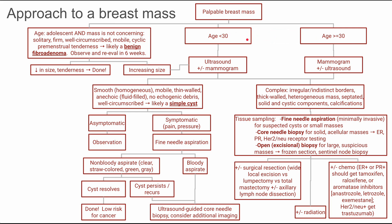If your patient is below 30 years old, you're going to start with the ultrasound and then add a mammogram if necessary. If they're above 30 years old, you can start with the mammogram and then do the ultrasound. The reason for this difference is that patients under 30 years old tend to have more dense breasts, meaning the mammogram is less accurate. So if they're under 30, start with ultrasound; if they're over 30, start with the mammogram.